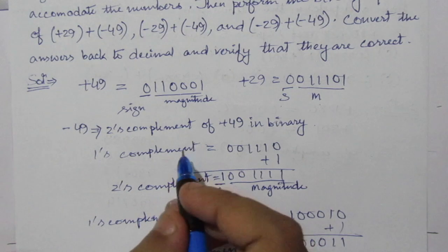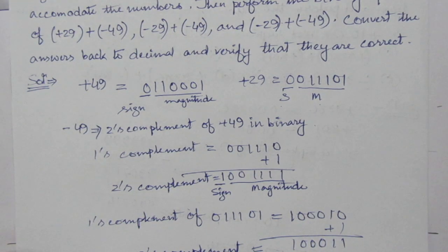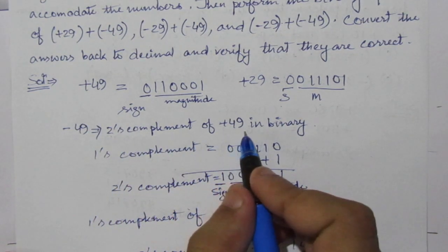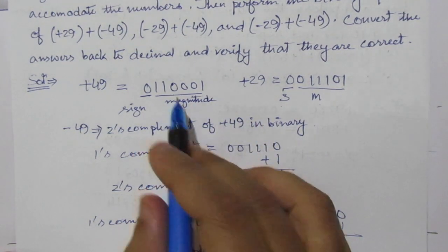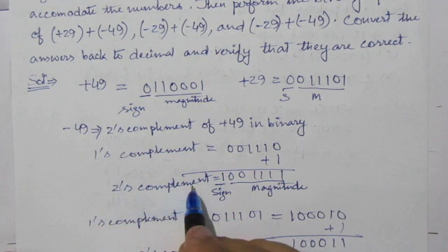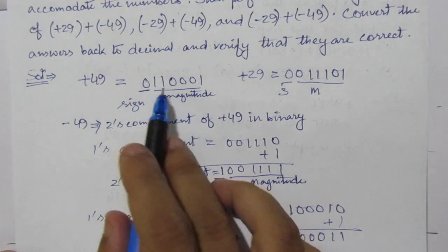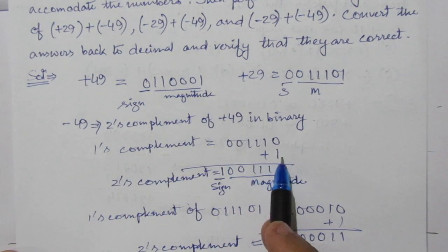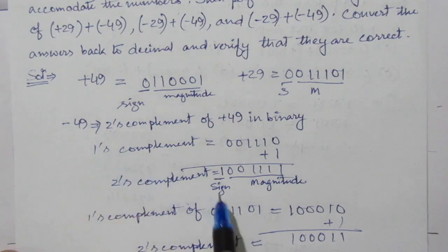We have to find the 2's complement because whenever we subtract a number, we find the 2's complement of the subtrahend and add it to the minuend. For minus 49, we find the 2's complement of +49. The 1's complement of the magnitude 110001 is 001110, and adding 1 gives the 2's complement. Because the number is negative, we put 1 for the sign bit.